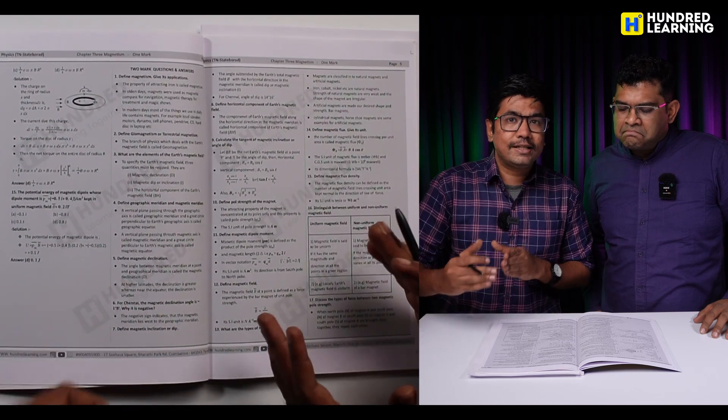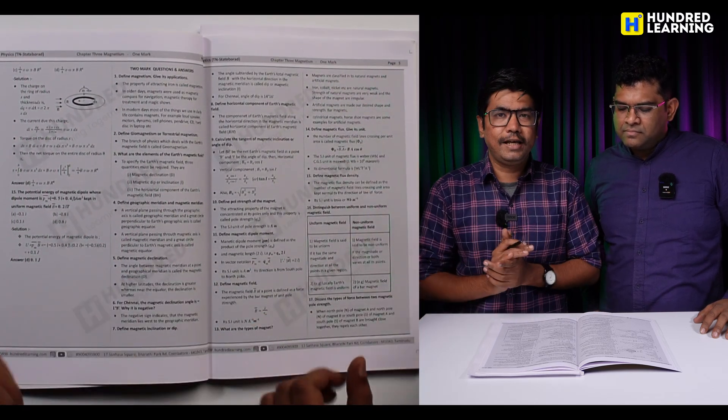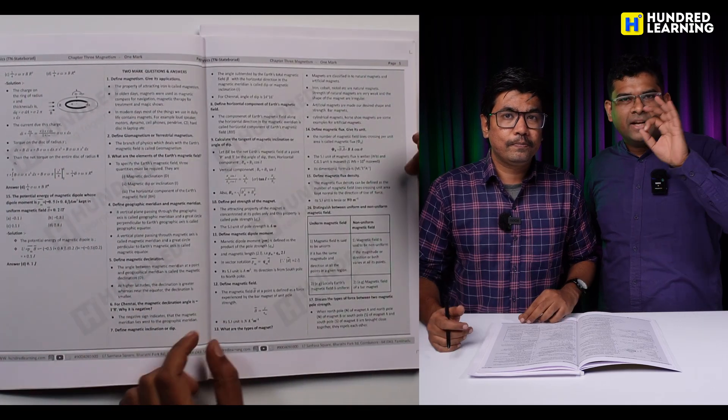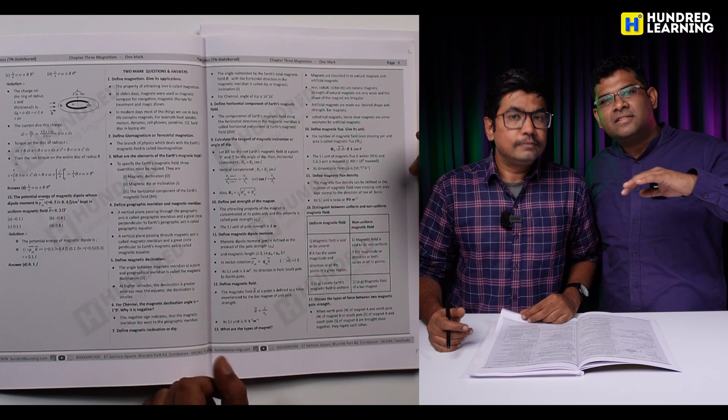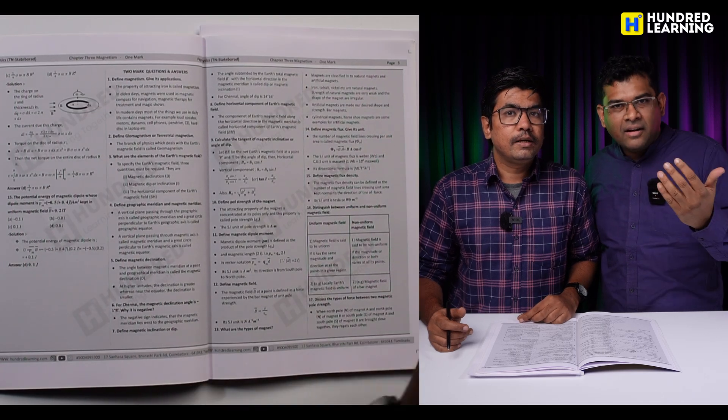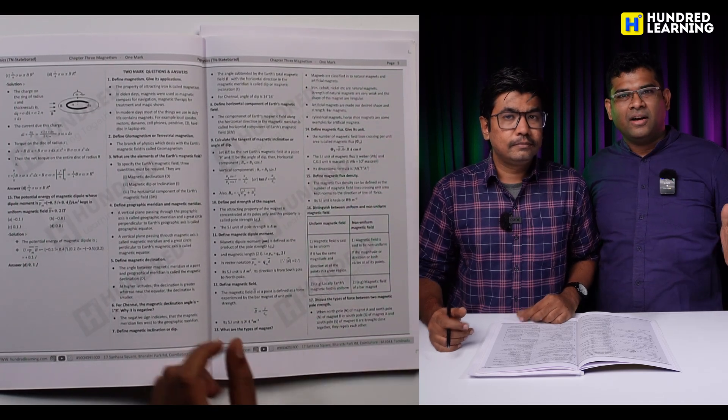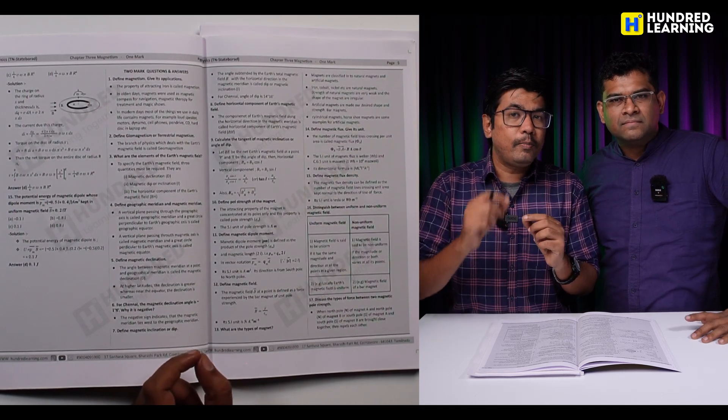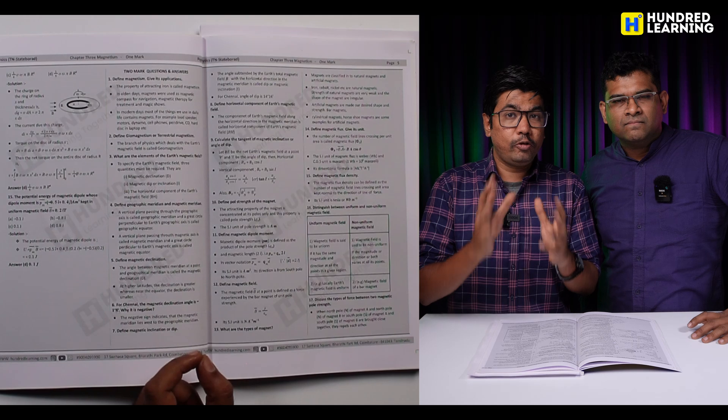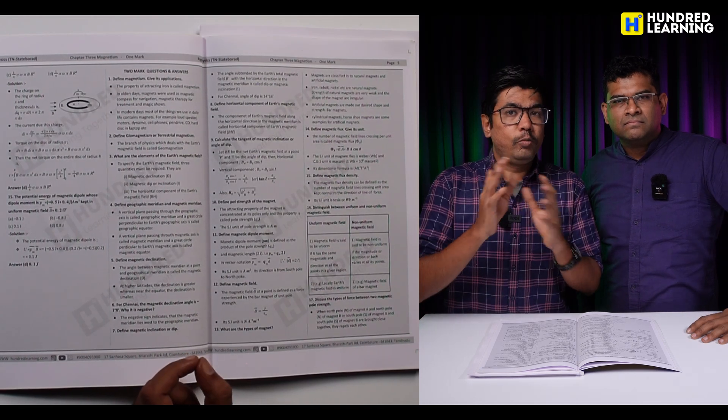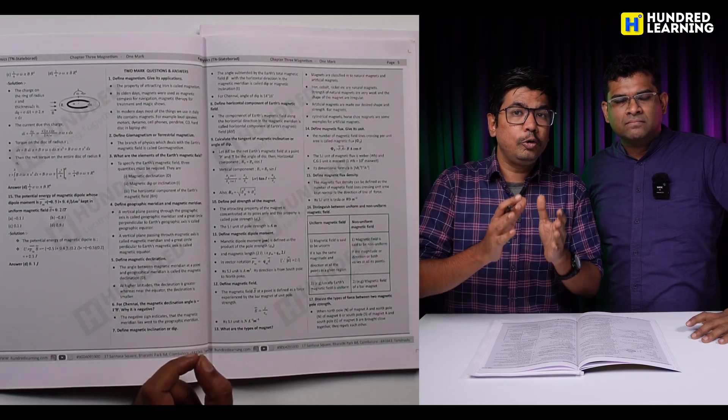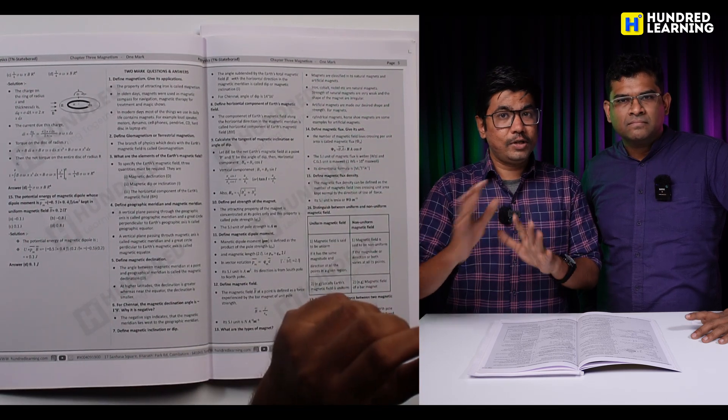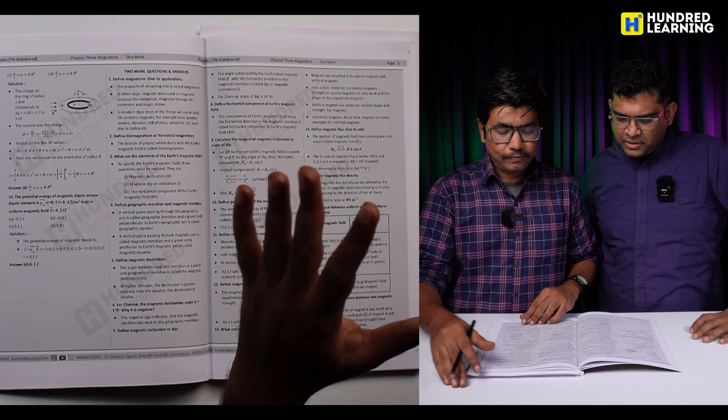For difference-based questions, you can use the tabular column and segregate it properly. You can present it properly in the exam. What you need to write in the exam should match what's in the answer key. The problem here is, if you don't write the correct points in each unit and the formulas with proper points, a 2-mark question will get 1-and-a-half marks, 3 marks will get 2 or 2-and-a-half marks. So you can avoid mark reduction.